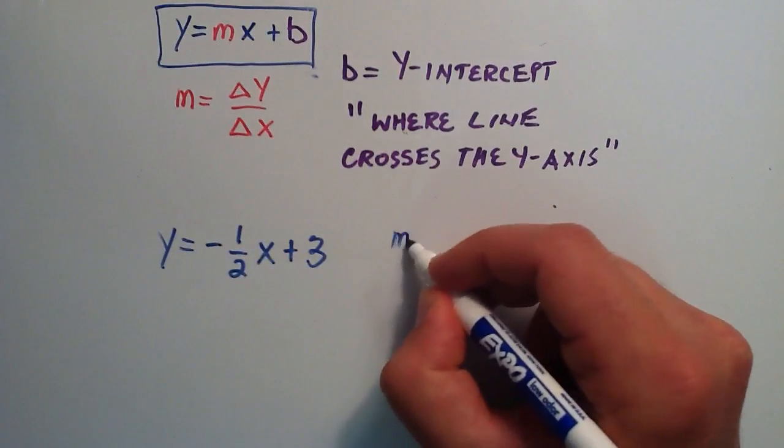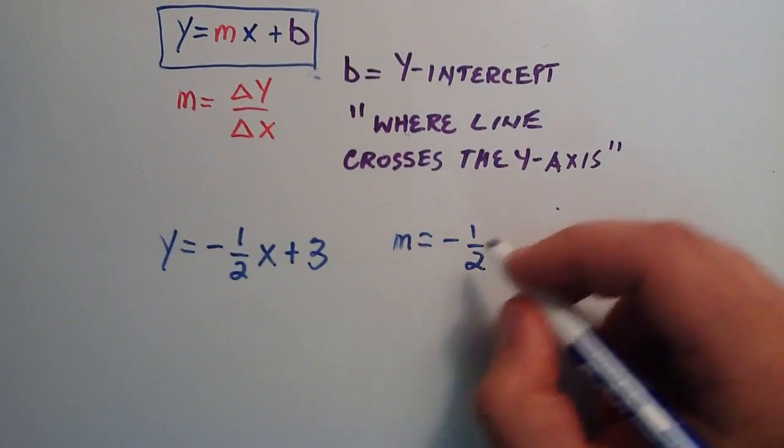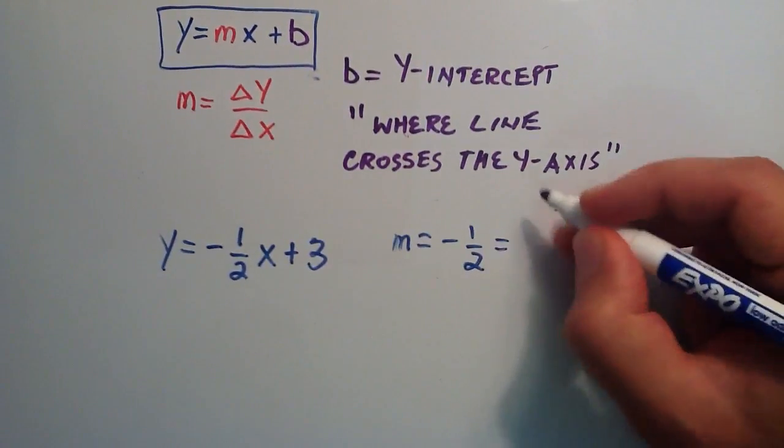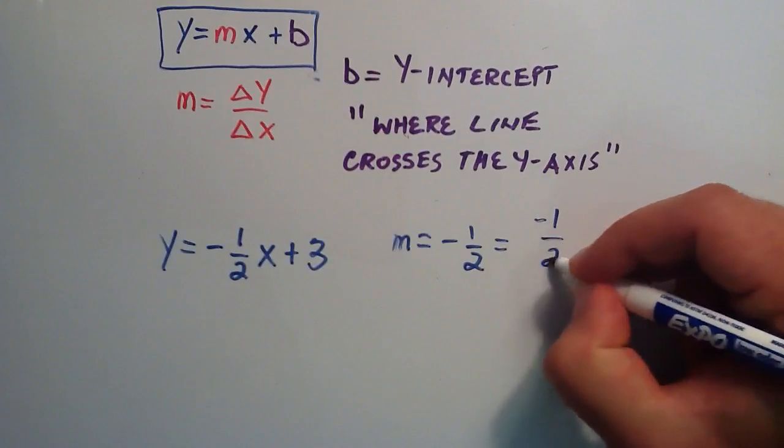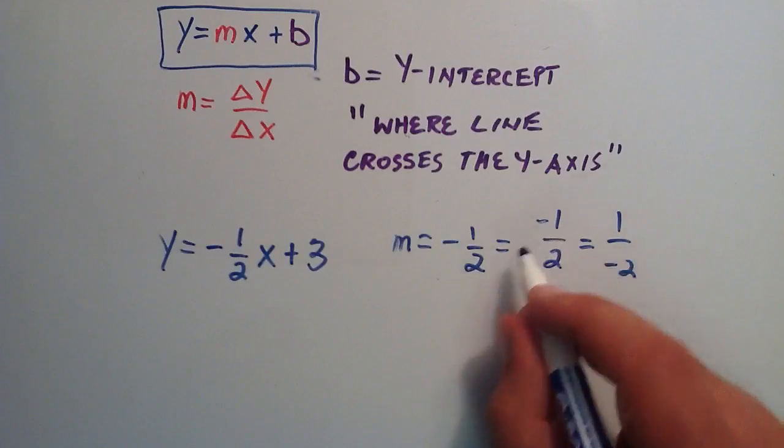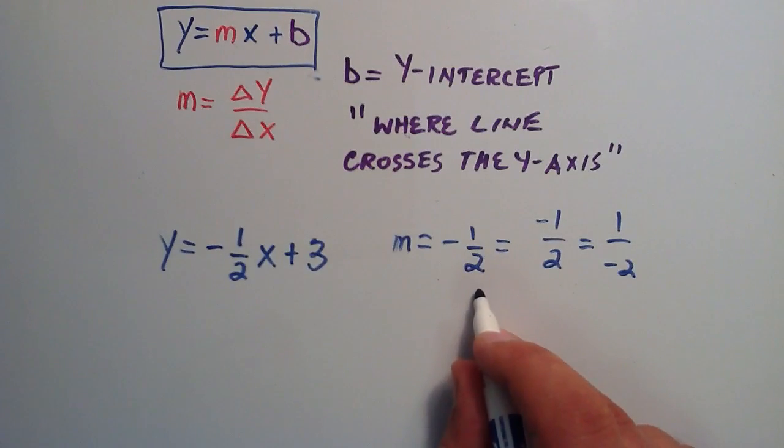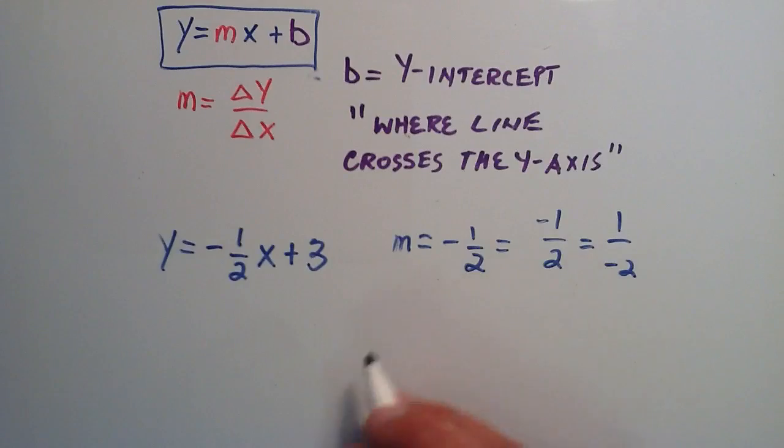So we have our line in the slope-intercept form here. And right here, we have our m. So our m is our slope, which is a negative one-half. And this can actually be written as either negative one divided by two or positive one divided by negative two, depending on how you want to distribute this negative here. And all three of these are equivalent.